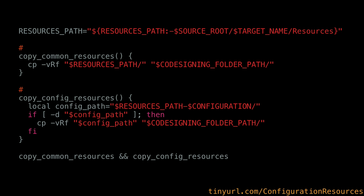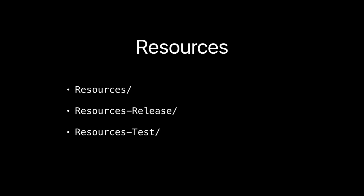Here is a simplified script. Depending on the configuration, it will copy some resources. It uses a convention of the resources path dash configuration name. So we're saying: if there are resources in 'resources-test', include them in the test configuration so they'll be in the test build.